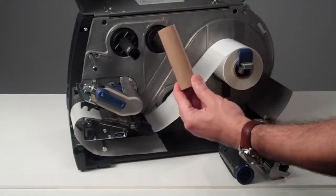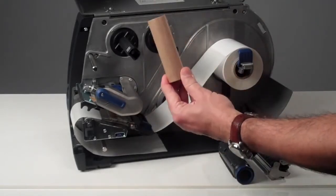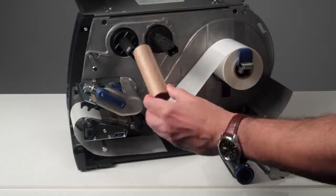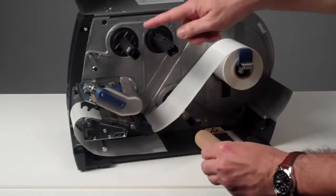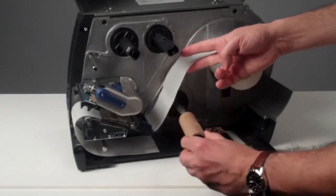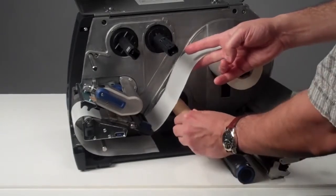The second way is to use the cardboard core. This is basically the same core that you will use for ribbon loading. As the spindles are the same, you can use the same core for rewinding the liner.